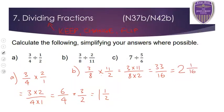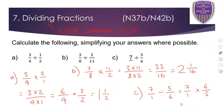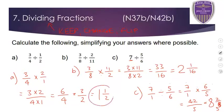3 times 11 is 33, 8 times 2 is 16. Can't simplify — as a mixed number, how many whole 16s go into 33 is 2, with 1 over 16 left over, so 2 and 1 sixteenth. For question C, 7 is a whole number so make it 7 over 1, divided by 5 over 6. Keep, change, flip — 7 over 1 times 6 over 5. 7 times 6 is 42, 1 times 5 is 5. As a mixed number, 5 goes into 42 eight times with 2 over 5 left over, so 8 and 2 fifths.